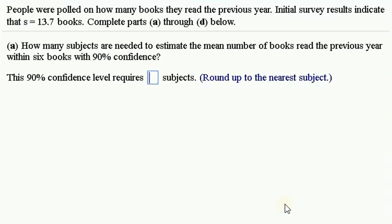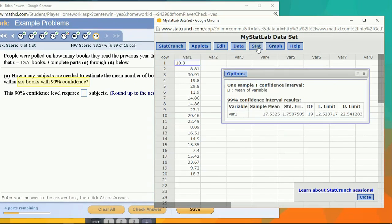So now we're going to figure out what sample size is needed in order to establish a confidence interval for certain requirements. We want to know how many subjects, which is how big of a sample size, is needed to estimate the mean number of books read within six books at 90% confidence.